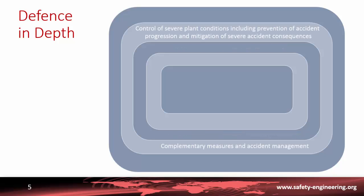If those systems fail, we reach the fourth level: severe accident, where there may be fuel degradation and core melting. The purpose here is to prevent accident progression and mitigate consequences through the containment. The main action is to manage the accident, ensuring the containment remains leak-tight so there is no radioactive release.